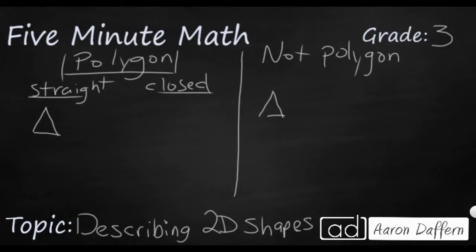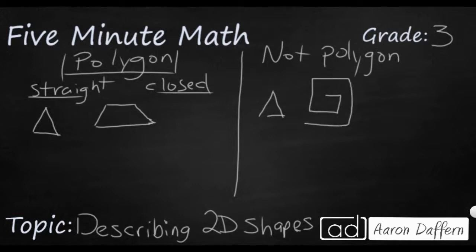Another polygon might be a trapezoid because it's got four sides that are straight and it's closed. But if I were to draw a really neat spiral, that would not be a polygon. And another example could be a hexagon — it's a six-sided shape, and that is a polygon because it's closed and has straight sides.